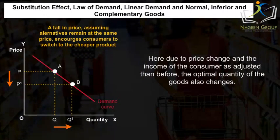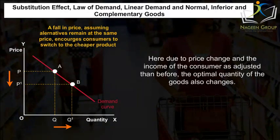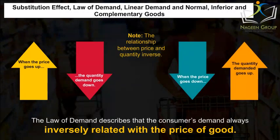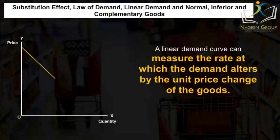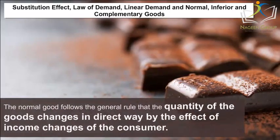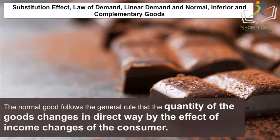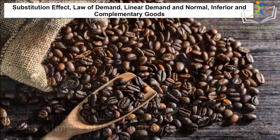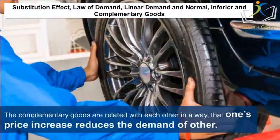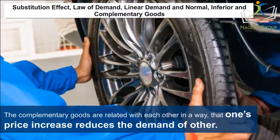Due to price change and the consumer's income being adjusted, the optimal quantity of goods also changes. The law of demand describes that the consumer's demand is always inversely related to the price of the good. A linear demand curve can measure the rate at which demand alters by a unit price change. The normal good follows the general rule that the quantity of goods changes directly by the effect of income changes. But for inferior goods, the consumer tries to choose less when her income level increases. Complementary goods are related such that a price increase in one reduces the demand of the other.